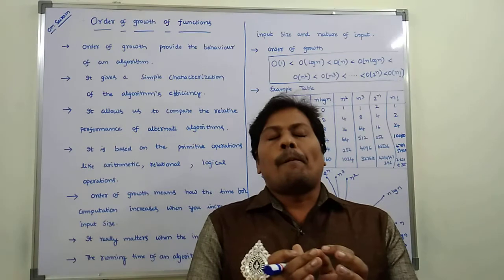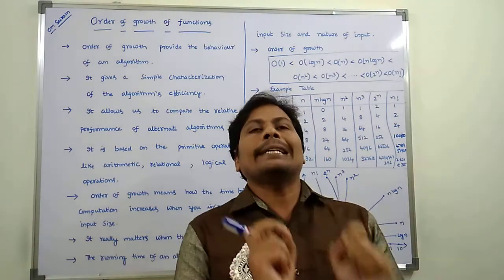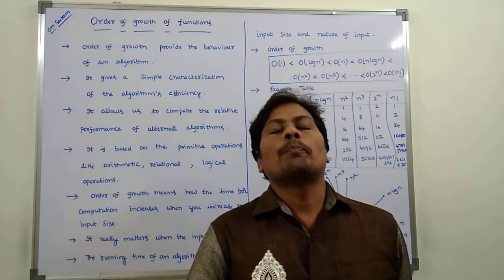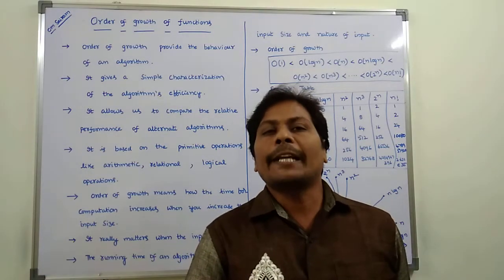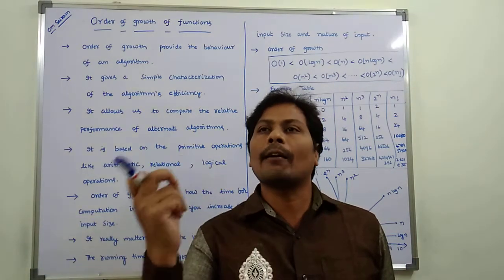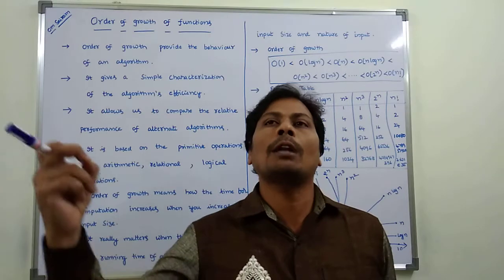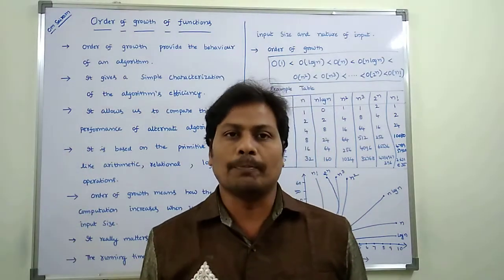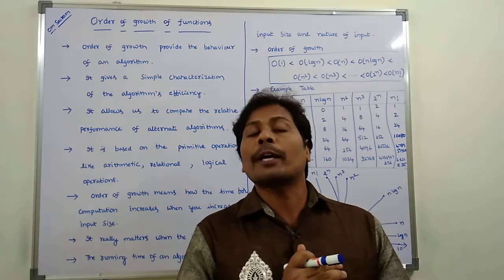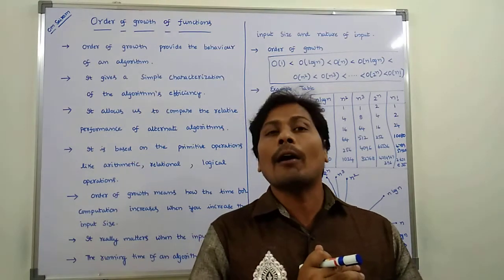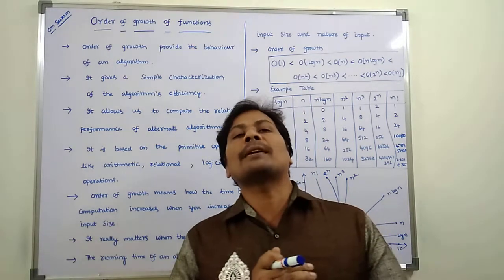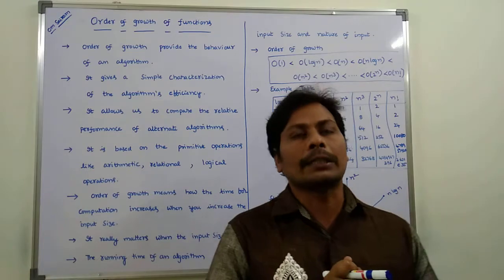Suppose we take a problem. To solve that problem, we can use different algorithms to solve the same problem. Now we have to compare the relative performance of the algorithms for the same problem. For that purpose, we use order of growth.